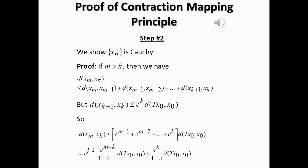If m is greater than k, then the distance between the m-th term of the sequence and the k-th term of the sequence is going to be less than or equal to the distance between the m-th term and the m minus one term, plus the distance between the m minus one term and the k-th term. We get that by applying the triangle inequality.